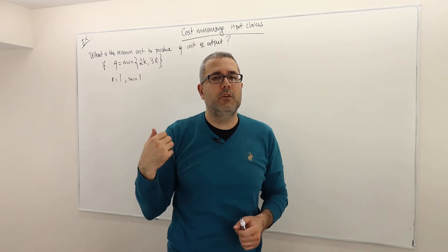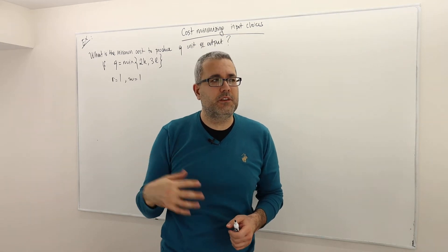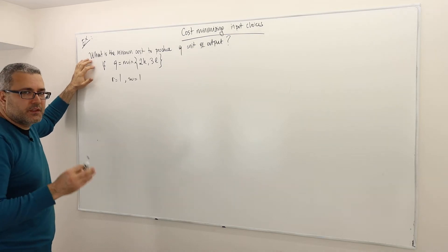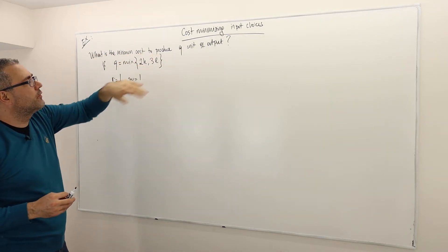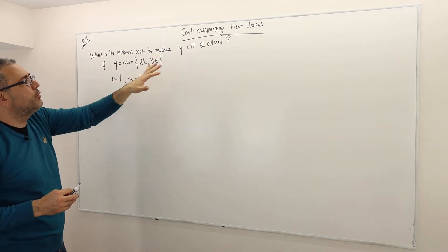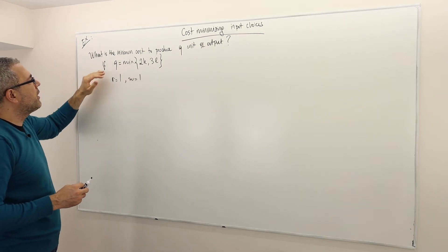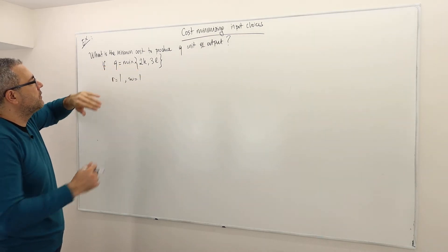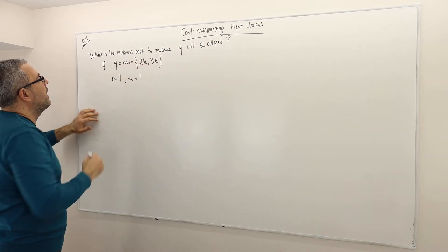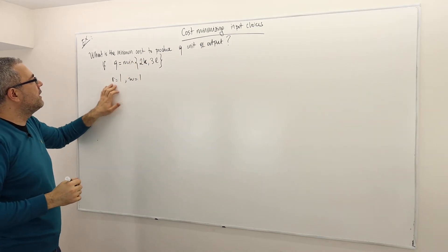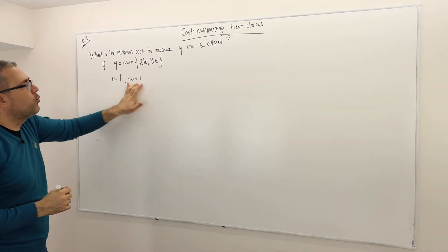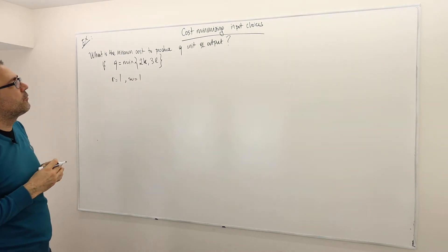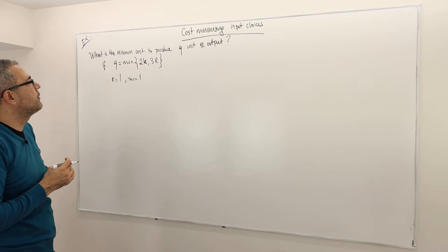Hi guys. Let's now look at this simple example. The question is asking: what is the minimum cost to produce Q units of output, where the production function is minimum of 2k and 3l, and where the input prices are 1 and 1 for both goods? What's going to be the cost of producing Q units of output?